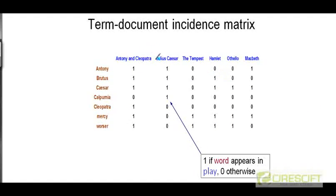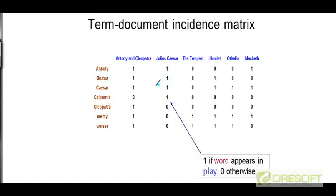Note that we are only keeping track here of which words appear in a given document. We are not keeping track of how many times a particular word appeared in a given document — we are just recording its presence or absence. So if Brutus appeared 15 times in some play, we are just recording a 1 in the cell for that particular play. We are not keeping a count of how many times Brutus appeared in that play.